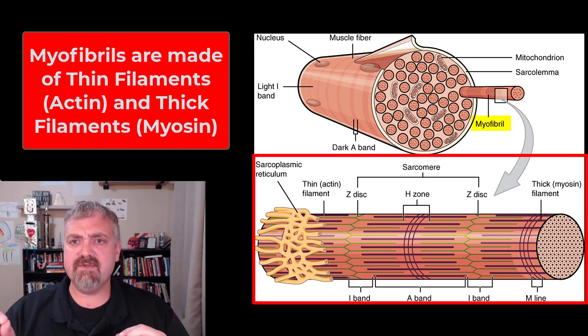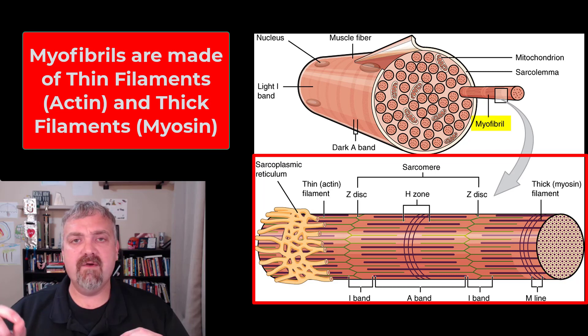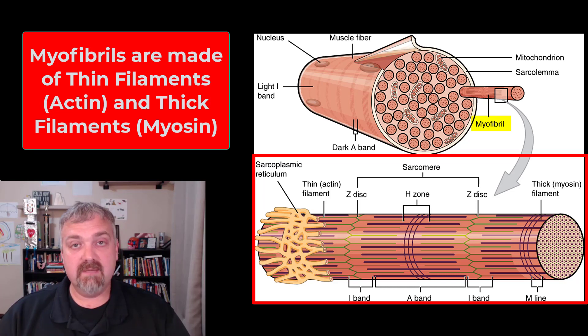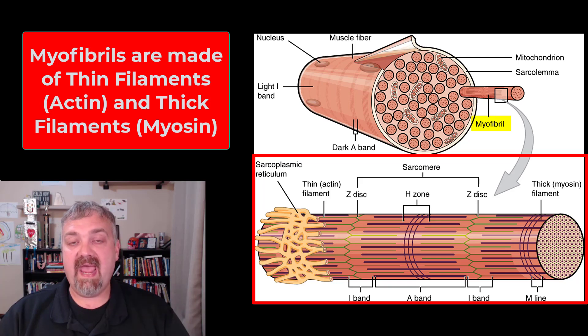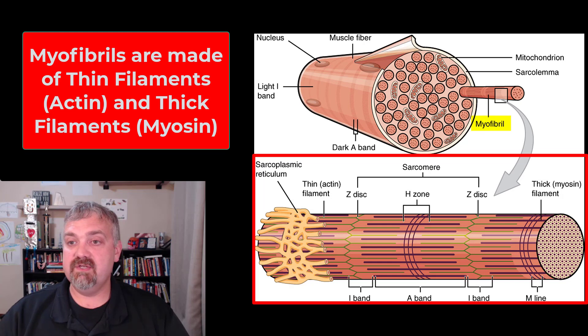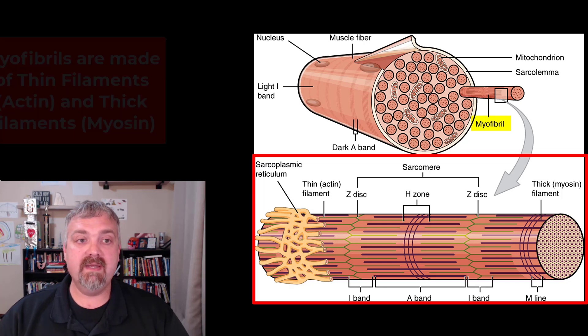Muscle fibers or muscle cells are made of myofibrils. You see here at the bottom a myofibril. Myofibrils are going to be made of your thin filaments called actin and thick filaments called myosin. I'll go into a little more detail there in just a moment.